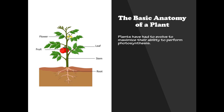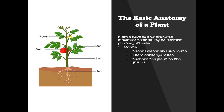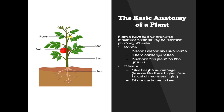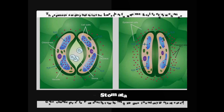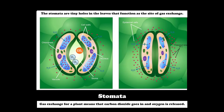Plants have had to evolve to maximize their ability to perform photosynthesis. The roots absorb water and nutrients and store carbohydrates, as well as anchor the plant to the ground. The stems allow the plant to have a height advantage because leaves that are higher tend to catch more sunlight. The leaves have evolved to become broad in order to maximize the surface area for light to hit.